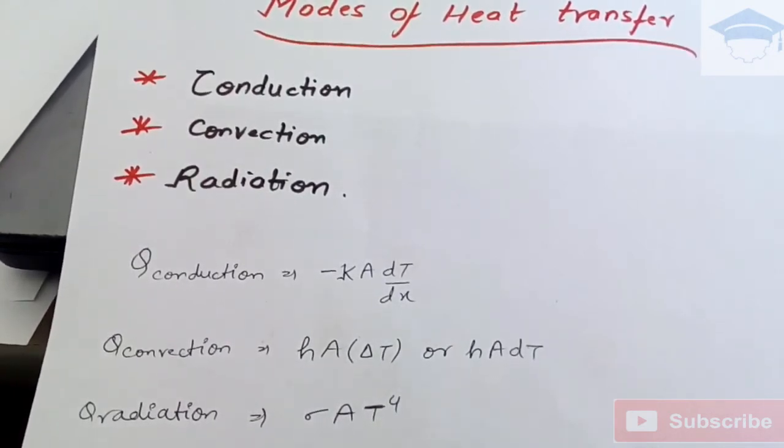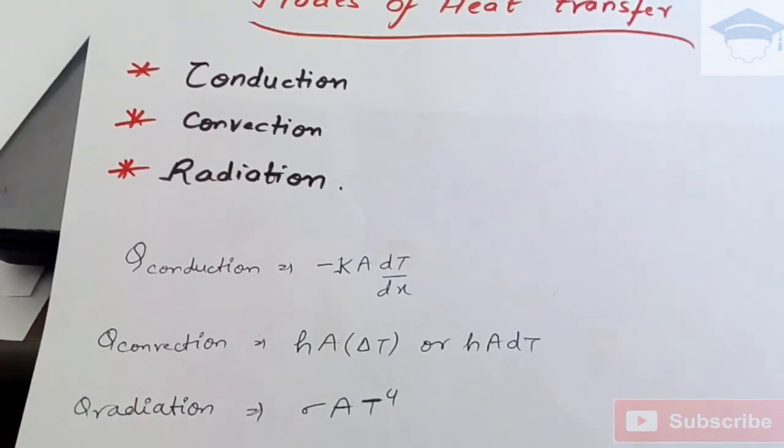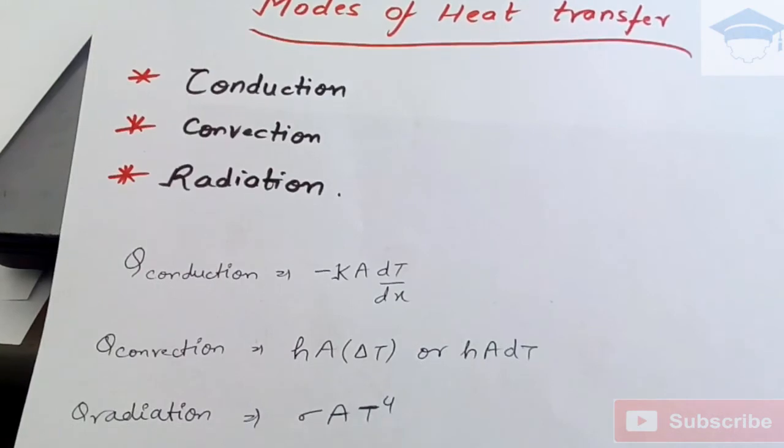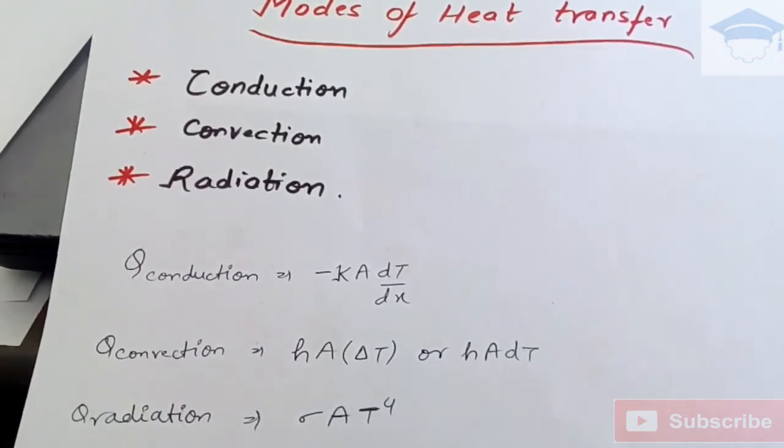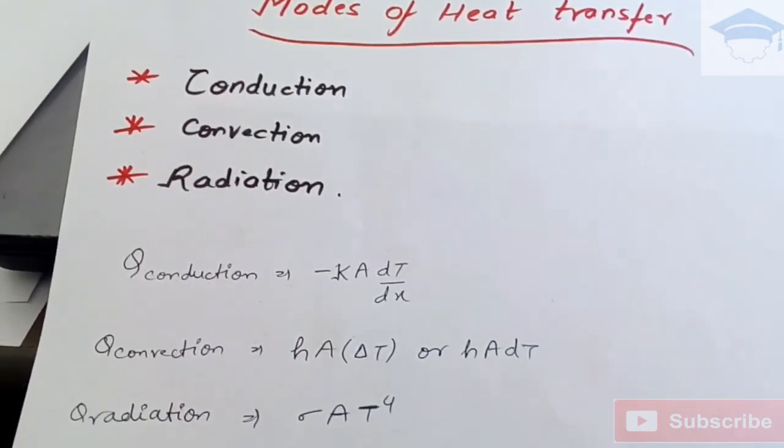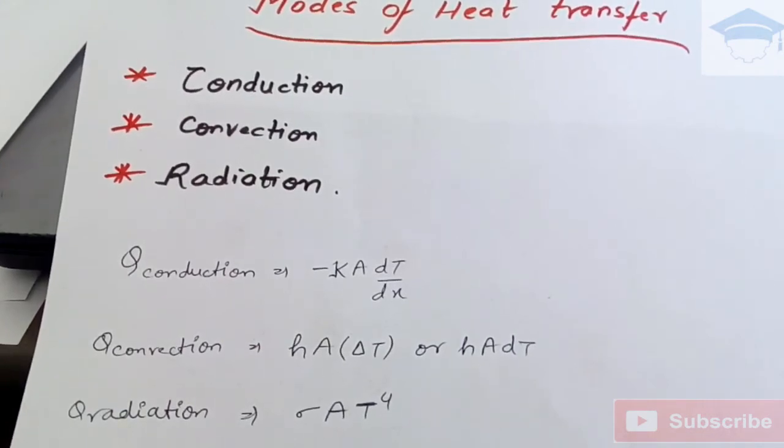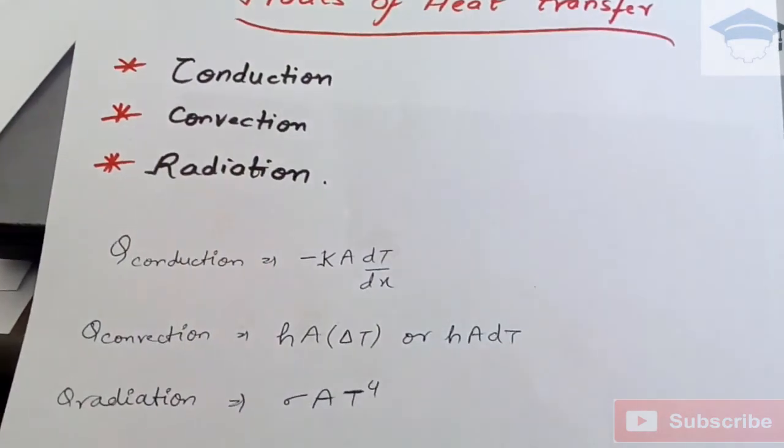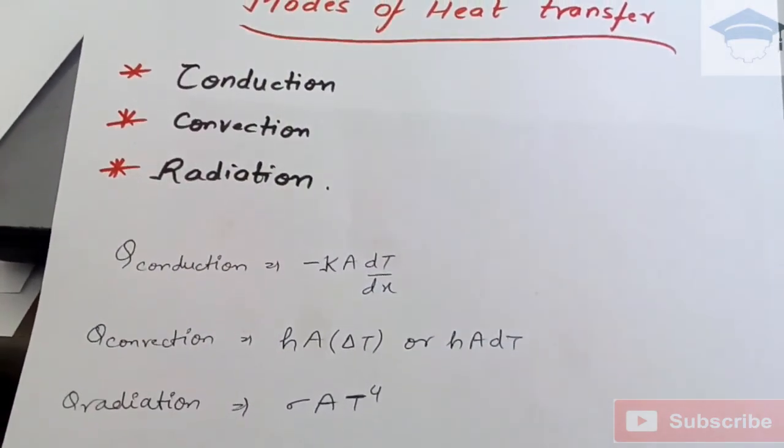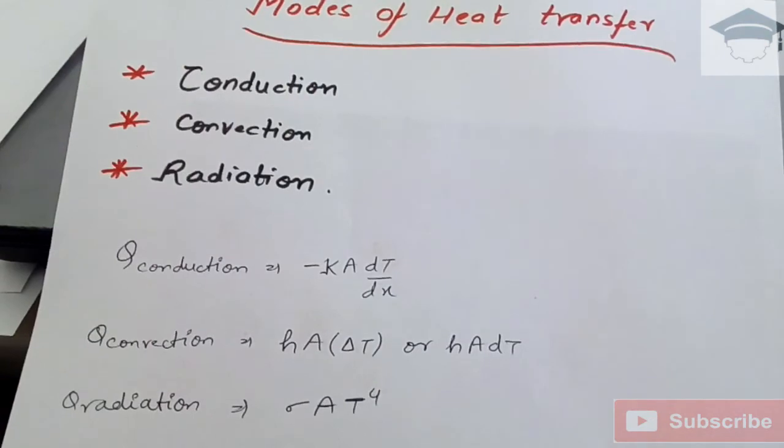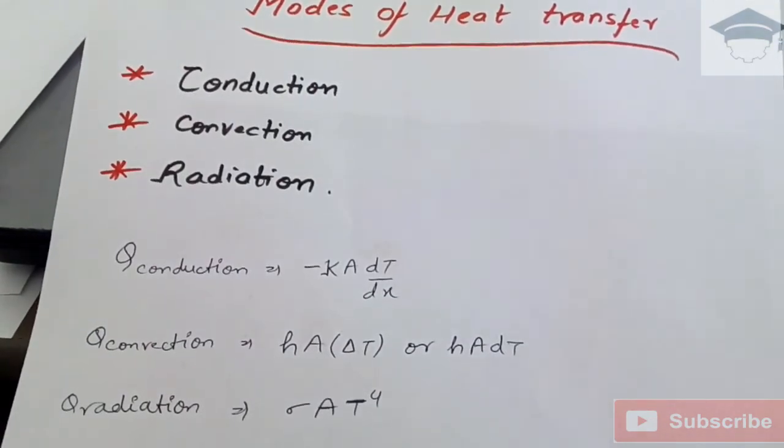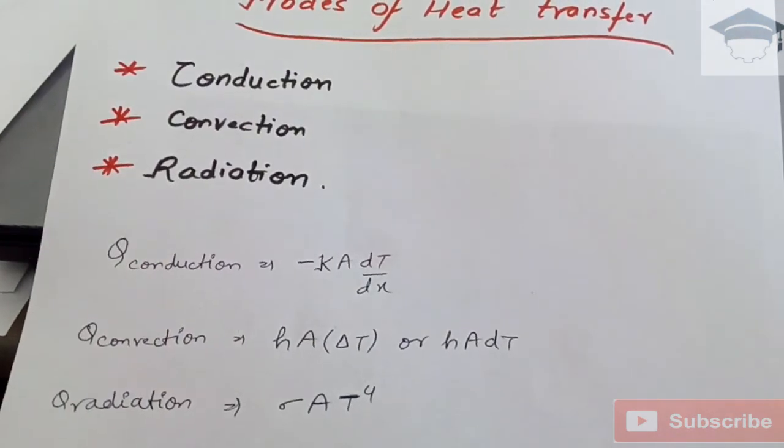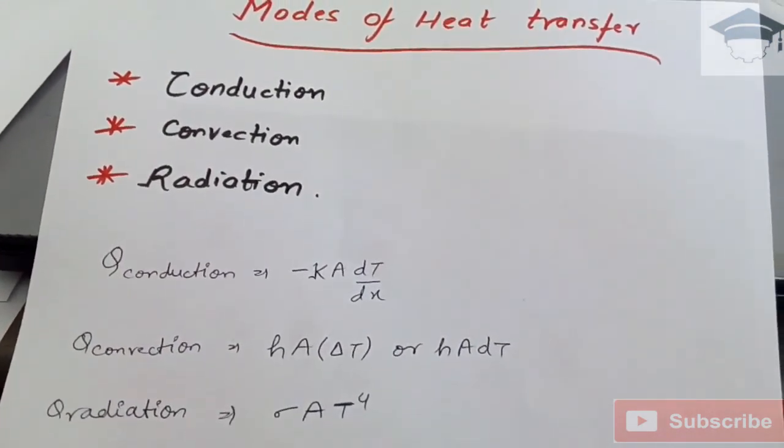And radiation heat transfer is given by sigma A T to the power 4, where sigma is the Stefan-Boltzmann constant, that is 5.67 times 10 to the power minus 8 watt per meter square Kelvin to the power 4. A is the surface area. T is the temperature of that surface from which the radiation is transferred. Now these were the three modes of heat transfer.